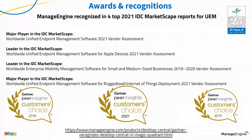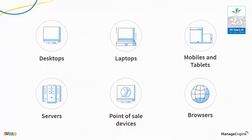Getting inside Desktop Central — what are the things that you can manage? Desktops, laptops, mobile phones, tablets, server operating systems, point-of-sale equipment, and browsers. All these endpoints can be managed from a single platform. We add browsers to this list because with the increase in SaaS-based applications, browsers are now considered more important endpoints. Any device that can install the Desktop Central agent should be manageable.